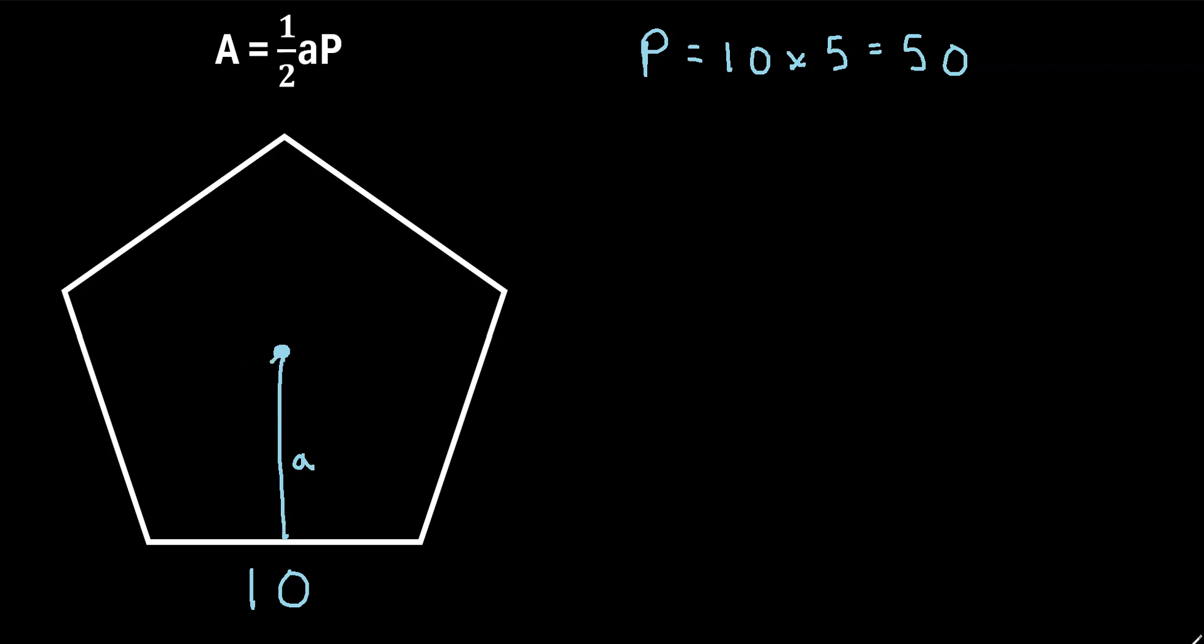Well, we can use a trick where we create a triangle like this, and what we can do is we can create five congruent triangles, since a pentagon has five sides. And what we know is that the sum of all of these central angles of these five triangles must add up to 360 degrees.